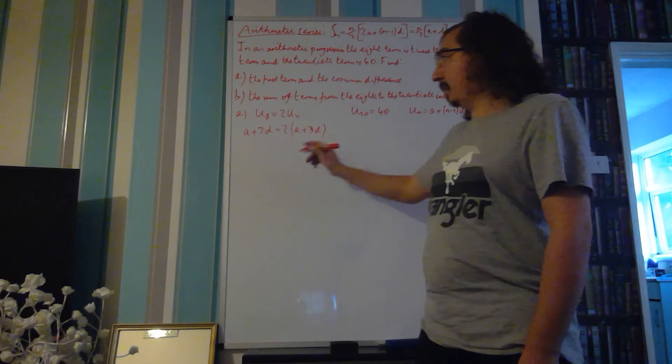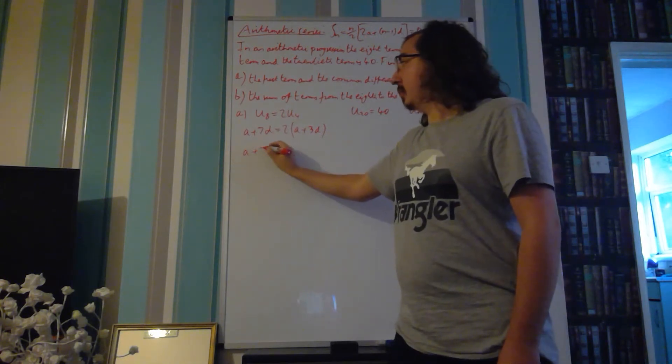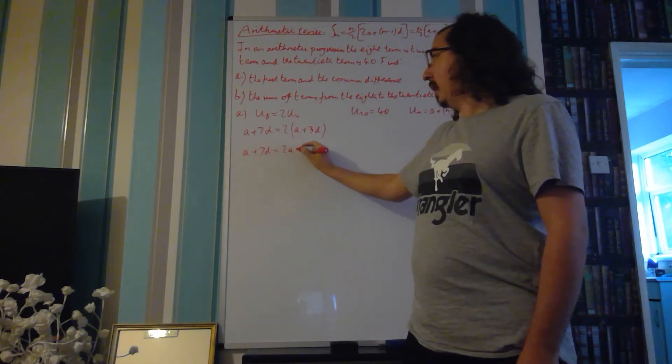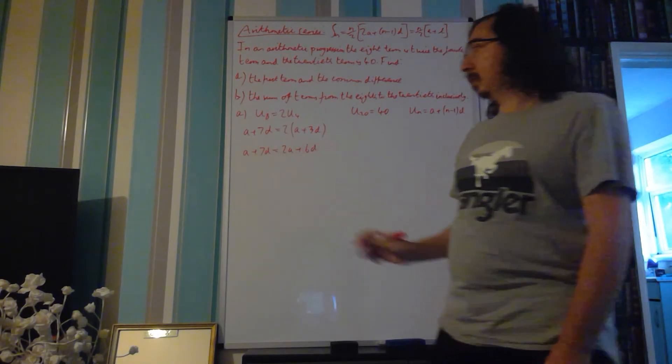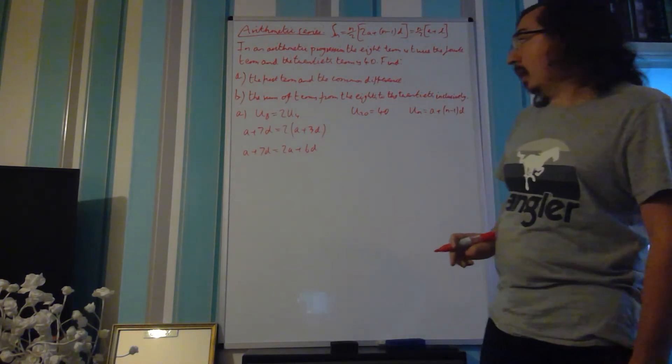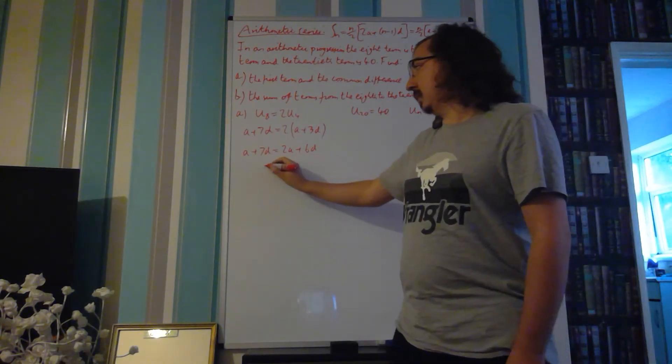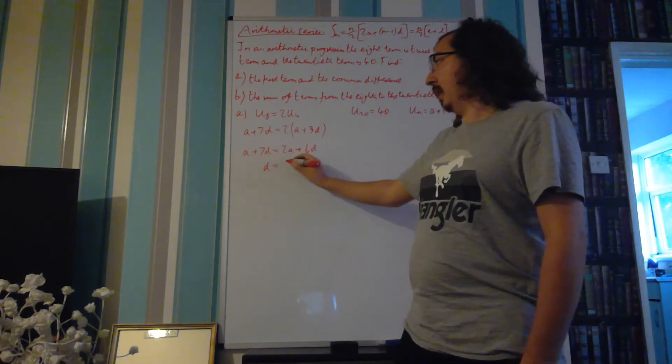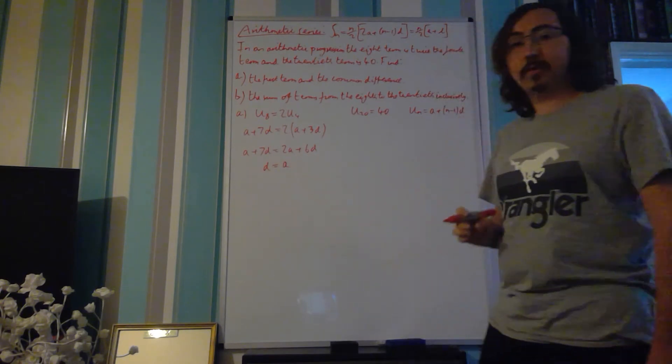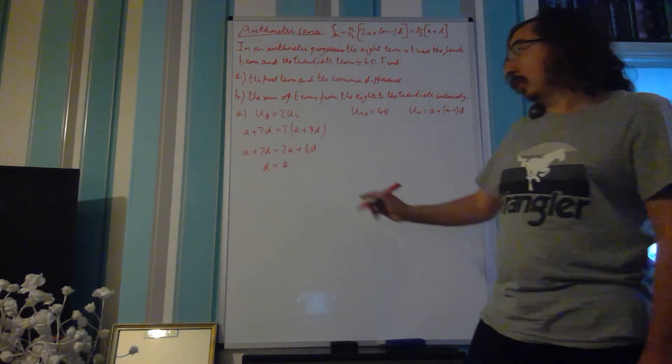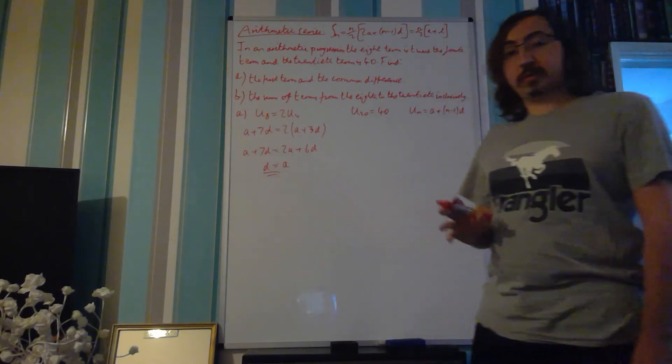If we expand our right-hand side, we've got A plus 7D is equal to 2A plus 6D. And if we do a little bit of rearrangement, if we move the 6D over, we'll have 1D, move the A over, and we end up with the expression D is equal to A, which is going to be really useful to us.